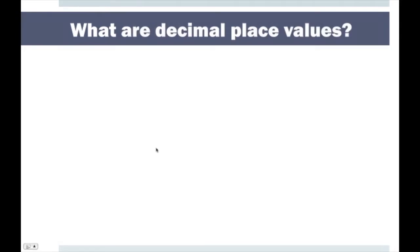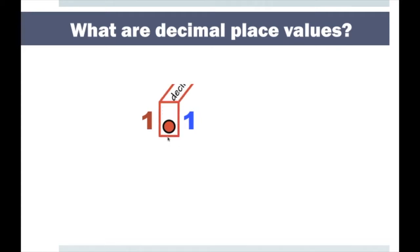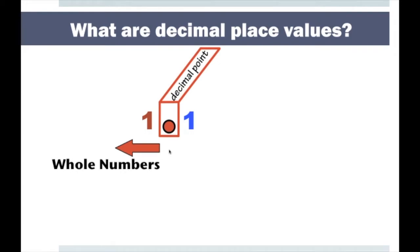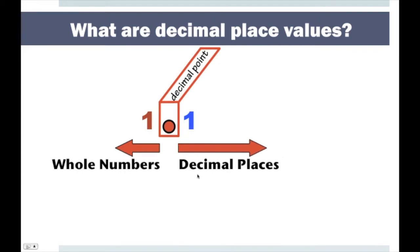So let's say we have the number 1.1. The most important thing is knowing that this here is our decimal point. The decimal point is incredibly important because it separates the left side, which are the whole numbers, from the right side, which are the decimal place values, or our decimal places.